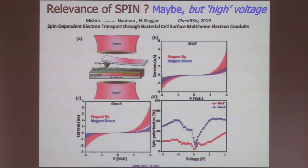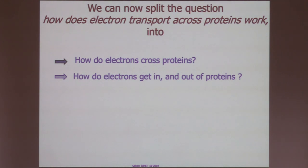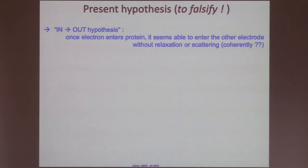So, that's food for thought. Let's finish by splitting the question of how electron transport across proteins works into how do they cross proteins, and how do they get in and out of proteins. Those are two questions that should be studied, preferably in a controlled fashion to separate the two. The present hypothesis to falsify is that once an electron enters the protein, it seems to be able to get out, it's free, to the other electrode. And that's weird. As if there's nothing that significantly scatters it. Not even at the other interface. I have no explanation for it. It may be an artifact, and I should admit that most of my 15 years in this area have been devoted to looking for artifacts. But there are other groups that have found results that can be interpreted in a similar way.